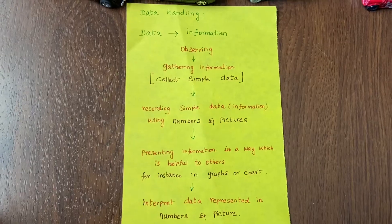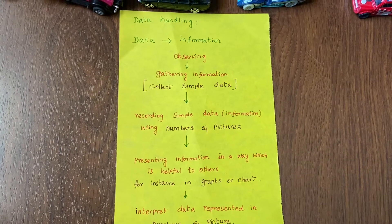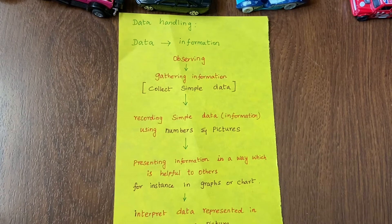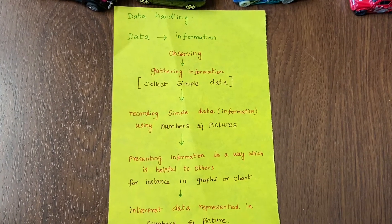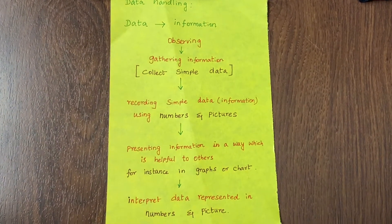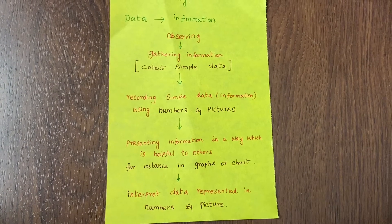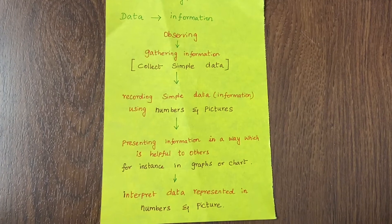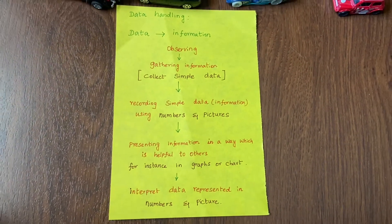Let me explain what is data handling. I have created this simple anchor chart to learn what is data handling. Data means information — so first, observing then gathering information, which is collecting simple data. Then recording simple data or information using numbers and pictures. Then presenting information in a way which is helpful to others, for instance in graphs and charts. Then interpreting data represented in numbers and pictures.